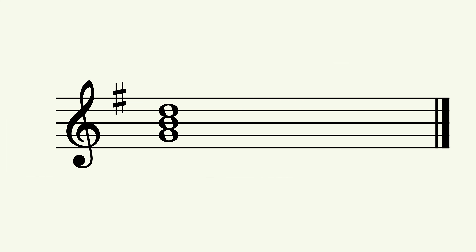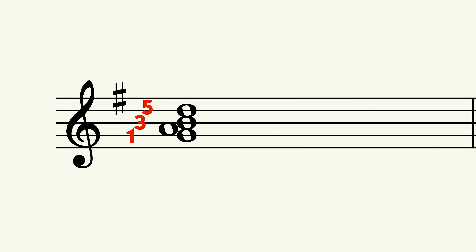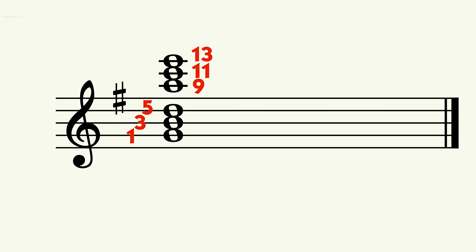Chord tones are simply notes that exist within a chord, and they are given numbers representing their interval, or distance in pitch, from the root note — so that would be one, three, and five. Tensions, on the other hand, are notes added to a chord for additional character and, of course, tension. Tensions refer to intervals two, four, and six, but are labeled outside of the first octave at nine, eleven, and thirteen, because they often reside on top of the chord, and they're also considered extensions of the diatonic seventh chord. So let's analyze the verse guitar and see if we can spot any tensions.